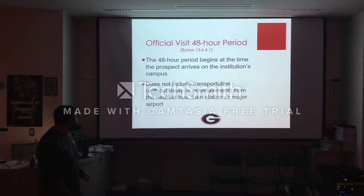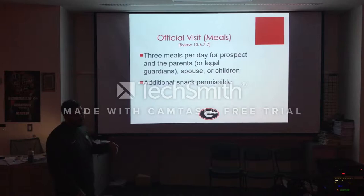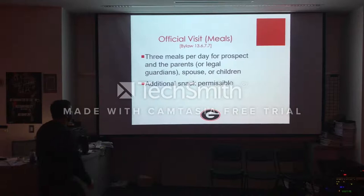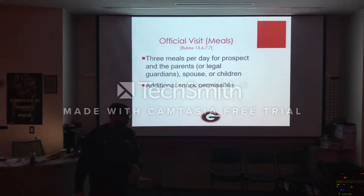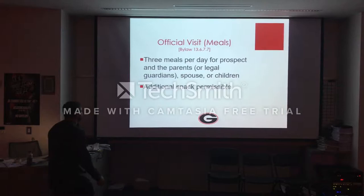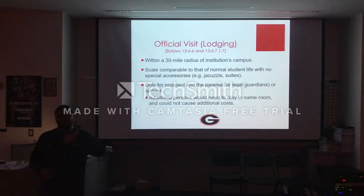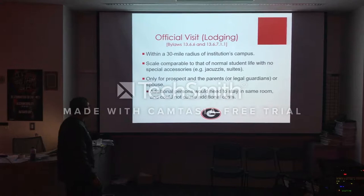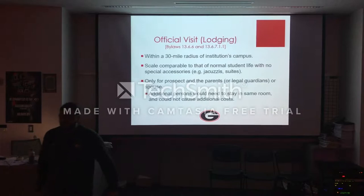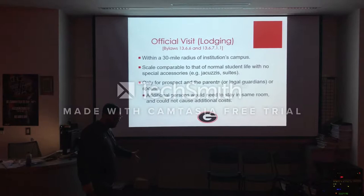Official visit meals: three meals per day for the prospect and the parents, spouse or children — I haven't really run into the spouse or children part because you're usually dealing with 17- or 18-year-olds. An additional snack is also permissible. For lodging, it must take place within a 30-mile radius of campus — we can't take a kid to Atlanta. Scale comparable to normal student life with no special accessories. Just give them a nice hotel room; it's not overly complicated. And it's only for the prospect and the parents — if they want to bring 75 other people, we can't pay for it.